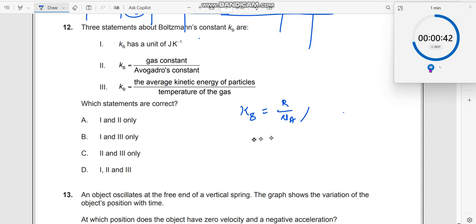So it has a unit of joules per kelvin. Let us relate this. We know that PV is equal to nRT. Put n equal to 1, you get PV is equal to RT.